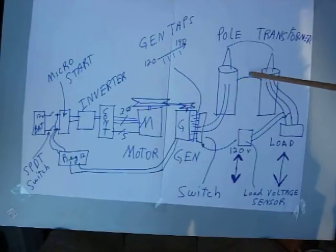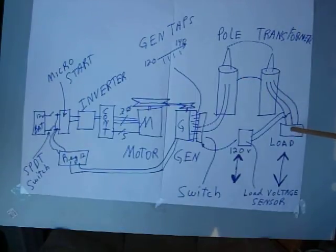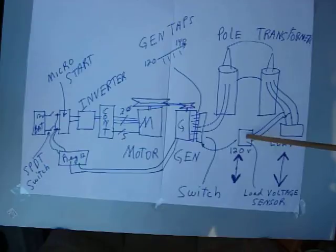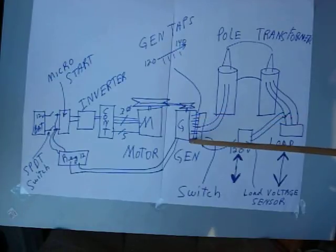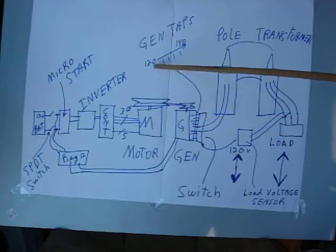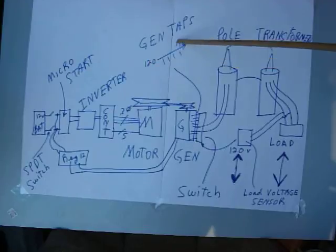Two pole transformers right here. These are the loads. This right here is a load voltage sensor. It controls a switch on the generator output. The generator output is from 120 to 140 volts